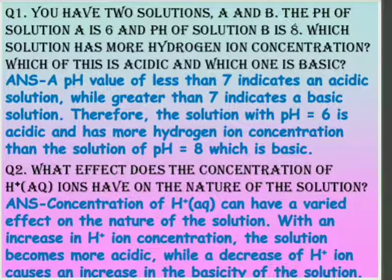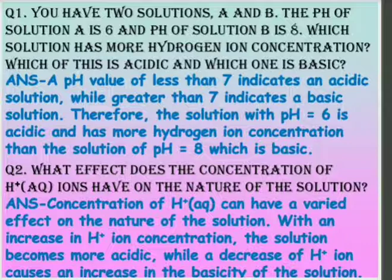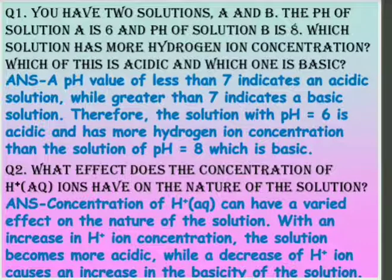Let us do some question answers to understand this better. You have two solutions A and B. The pH of solution A is 6 and B is 8. Which solution has more hydrogen ions? The pH scale is divided into three categories: 0, 7, and 14. 0 shows acidic, 7 shows neutral, and 14 shows basic. When we move from 7 to 0, acidic nature increases; when we move from 7 to 14, basic character increases. Solution A with pH 6 is acidic, and solution B with pH 8 is basic.